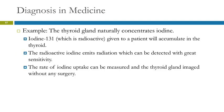One example is using iodine-131 to evaluate the thyroid. Your thyroid gland naturally concentrates iodine. If you administer iodine-131 to a patient, it will accumulate in the thyroid, and then the radioactive iodine emits radiation which can be detected. You can look at the rate of iodine uptake, measure that, and image the thyroid gland without surgery.